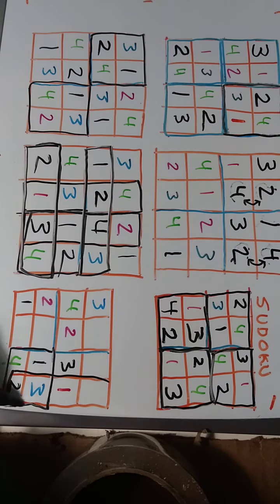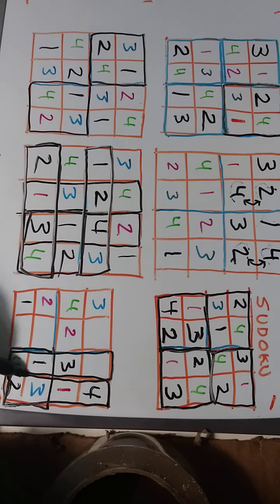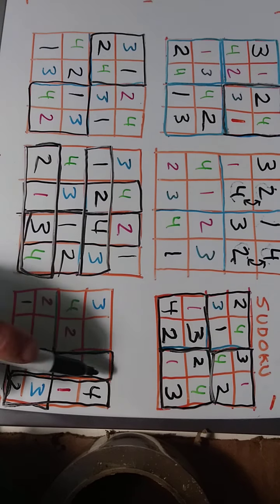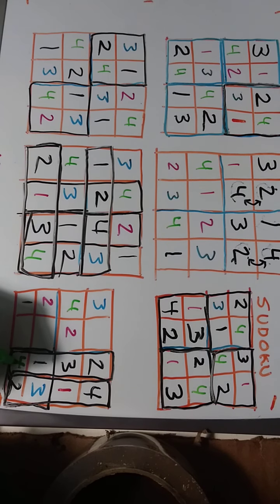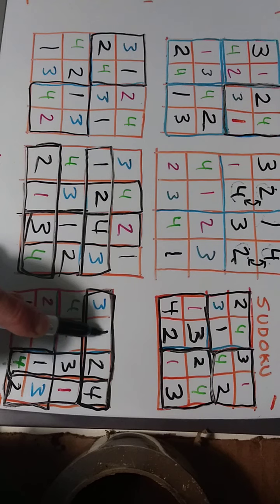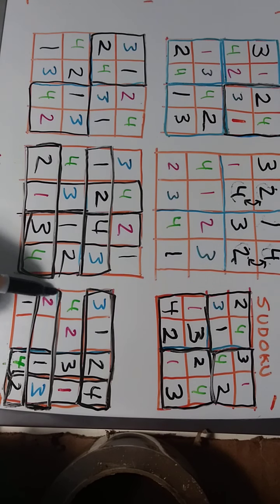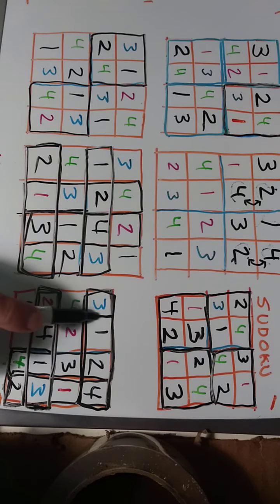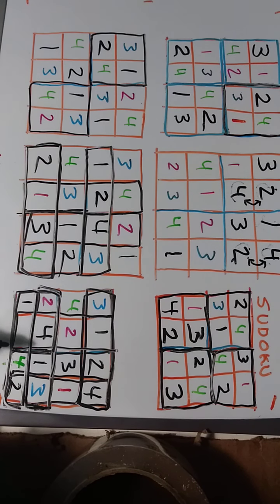Then in this column we're missing a four. In this other column we have one, four, three — so we're missing a three, and we're missing a two. Going to this row, we're missing a two. And in this next row, out of one, two, three, and four, we're missing a four. We could use this column, the bottom left four squares, or the bottom row — each way we can see we're missing a three.